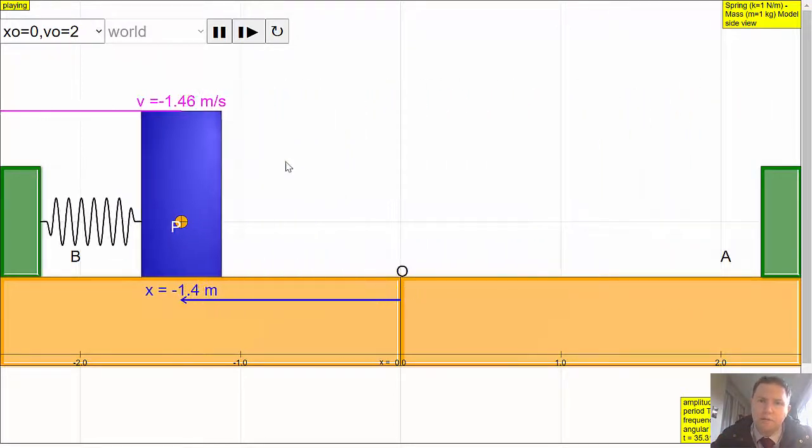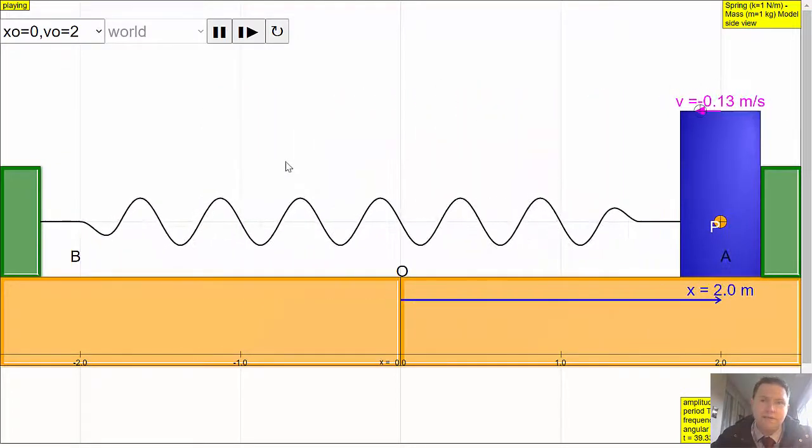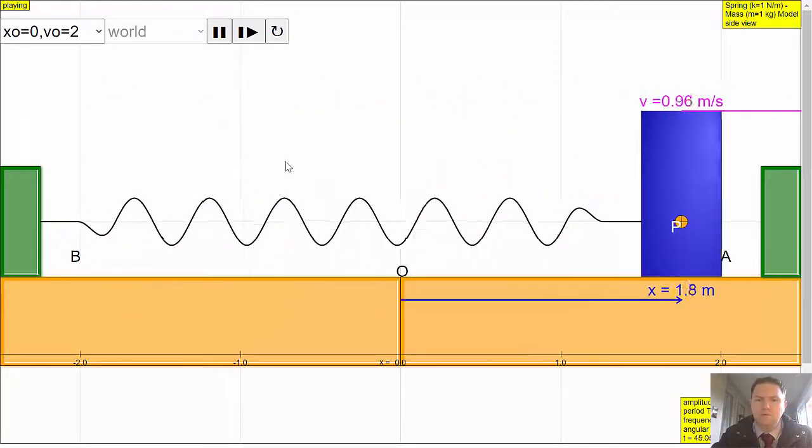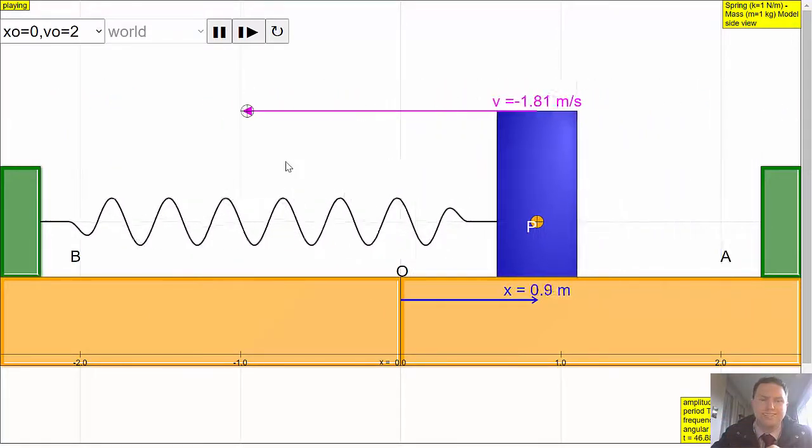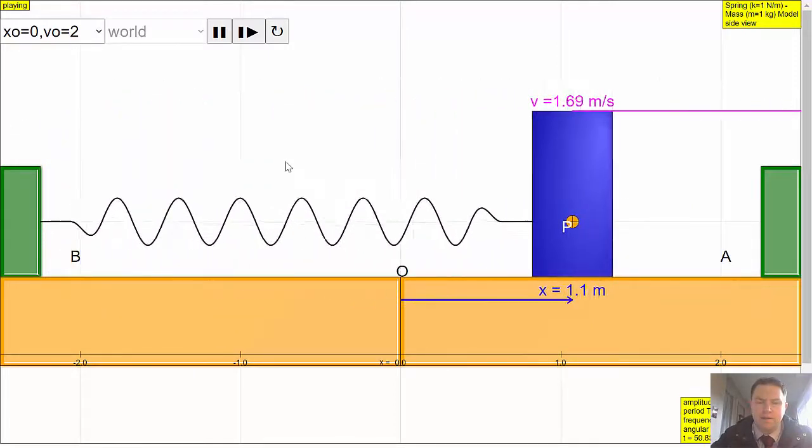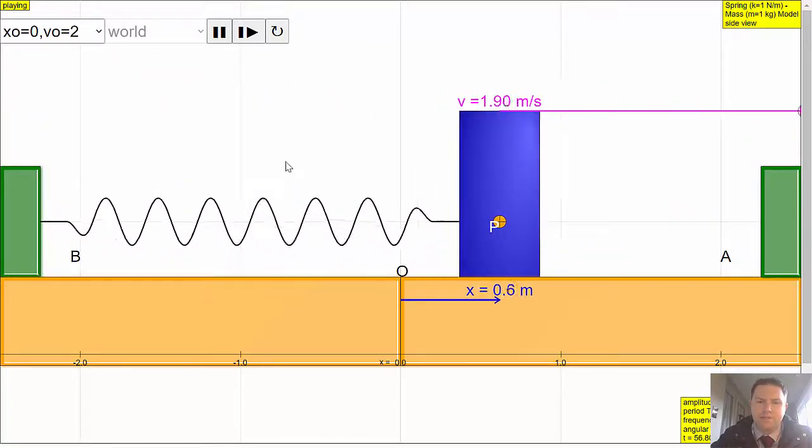So you see that there's a spring, and that should immediately make you think of Hooke's law, f equals negative kx, where k is the spring constant. As x gets bigger, the force must also get bigger. So it must also be accelerating the most when you have the largest change in x. You're also seeing that the velocity is the greatest when x is zero.